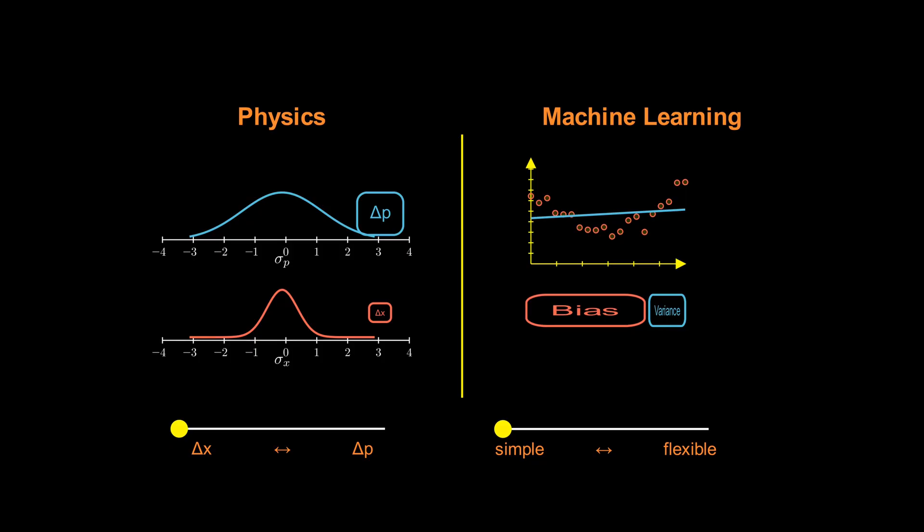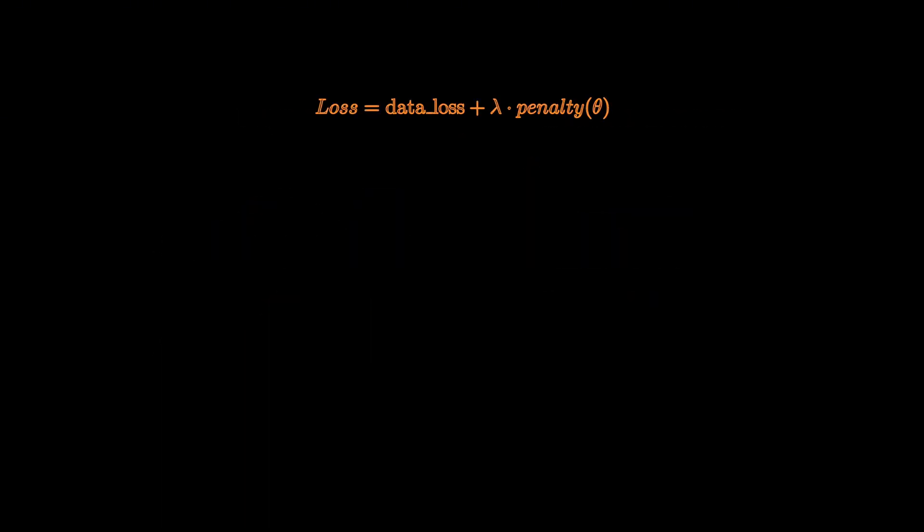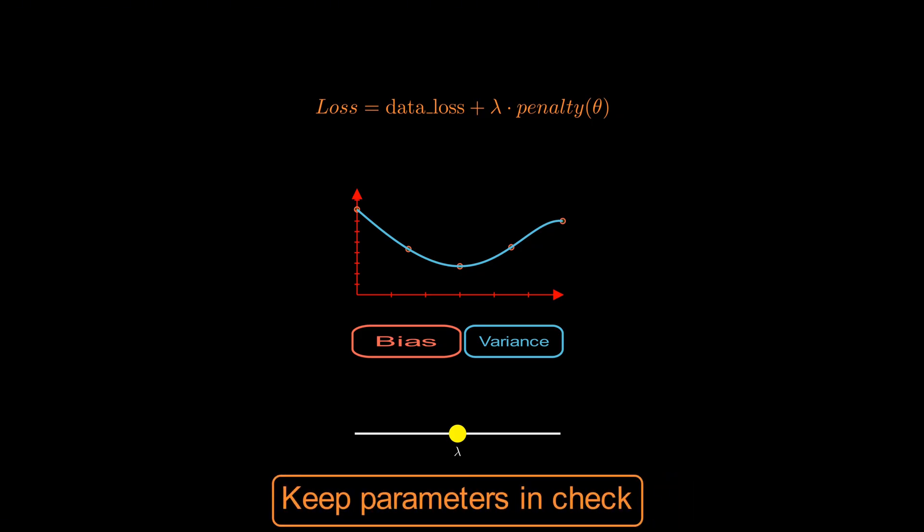One practical way to adjust this balance is regularization. Regularization adds a penalty term to the loss function, constraining the model's parameters. This effectively increases bias slightly but decreases variance, helping the model generalize better. It's like telling your model, you can't be too wild with your parameters. Keep them in check.